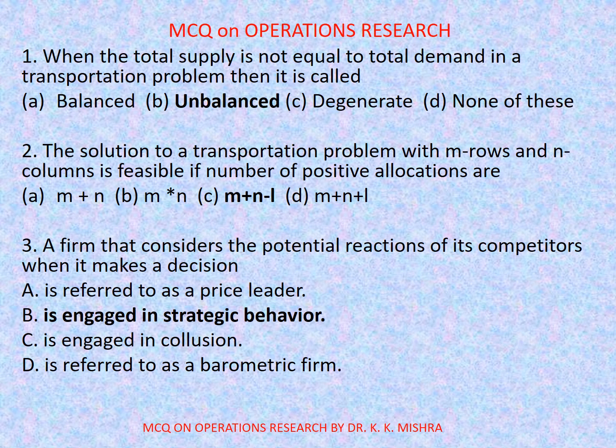Question number 1: When the total supply is not equal to total demand in a transportation problem, then it is called — options are: a) balanced, b) unbalanced, c) degenerate, d) none of these. Correct option is b) unbalanced.